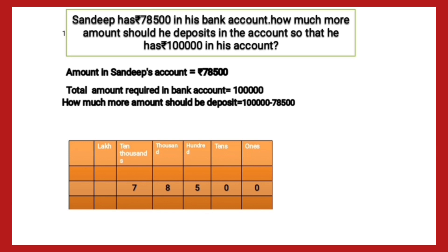We write 78,500 and 1 lakh with a subtraction sign. As we can see, in 1 lakh there is nothing at the ones, tens, hundreds, or ten thousands place — only 1 is there at the lakhs place. In 78,500 we have 5 at hundreds, 8 at thousands, and 7 at ten thousands. To subtract, we will need to start from the hundreds place.